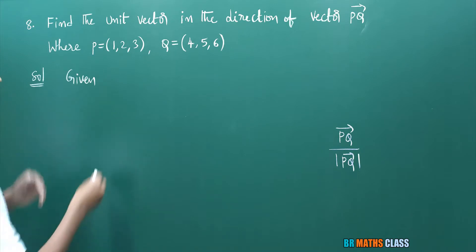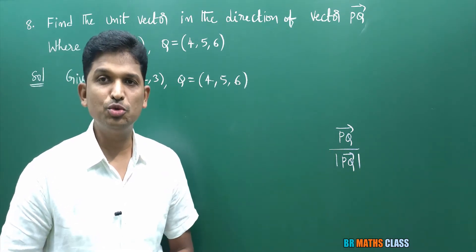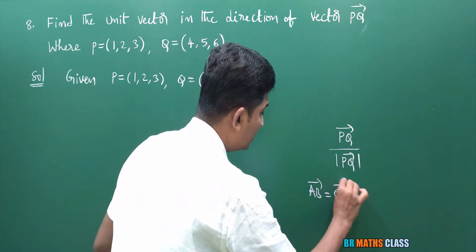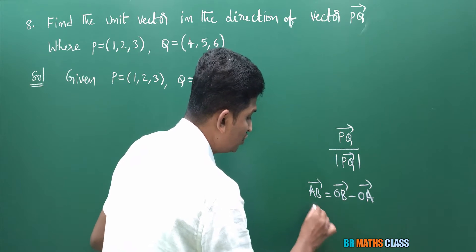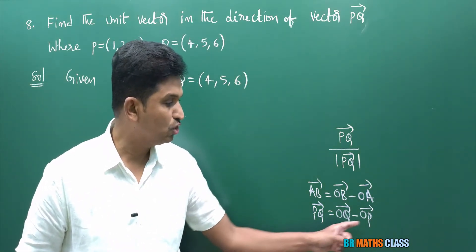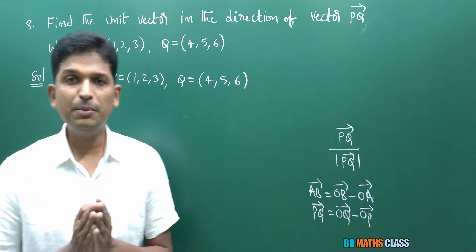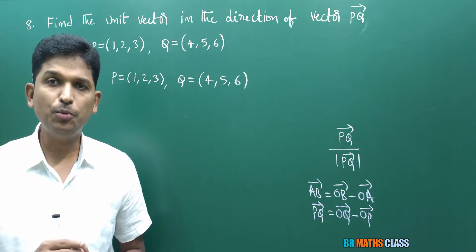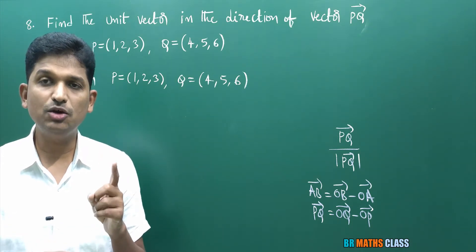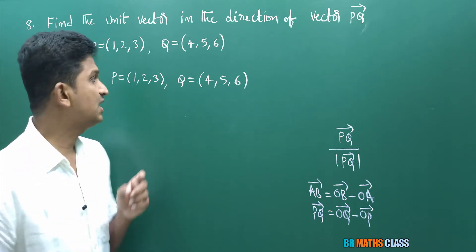First I will write the given information. In triangle law of vector addition, we learned that AB⃗ equals OB⃗ minus OA⃗. Similarly, PQ⃗ equals OQ⃗ minus OP⃗. To calculate PQ⃗, if you know OQ⃗ and OP⃗ it is enough. But op⃗ and oq⃗ are not directly given. We know every point can be expressed in terms of its position vector.